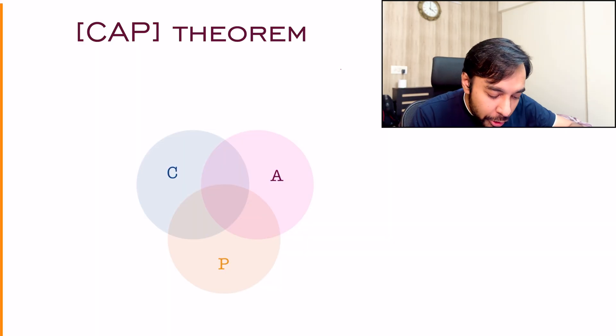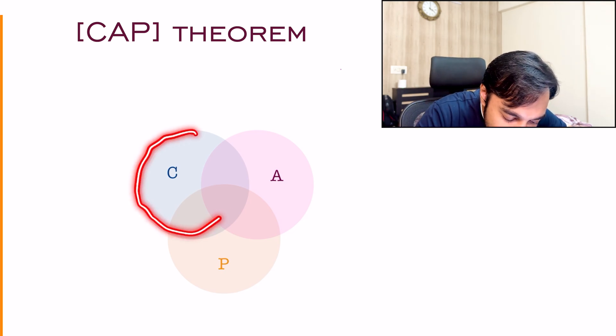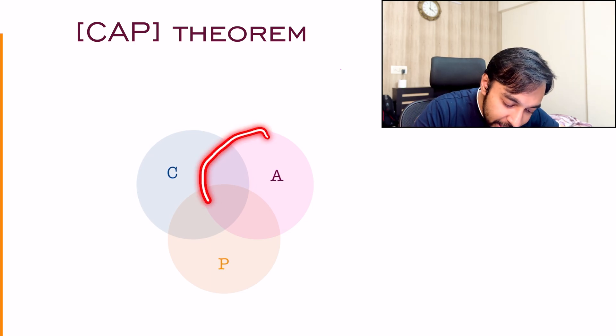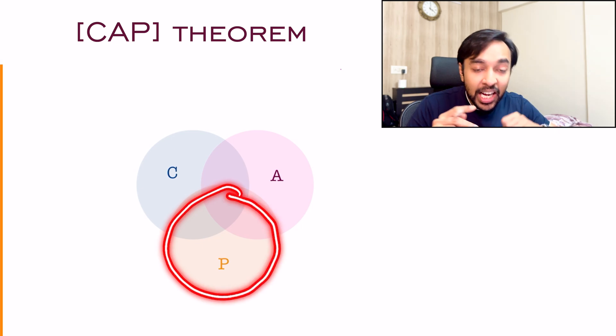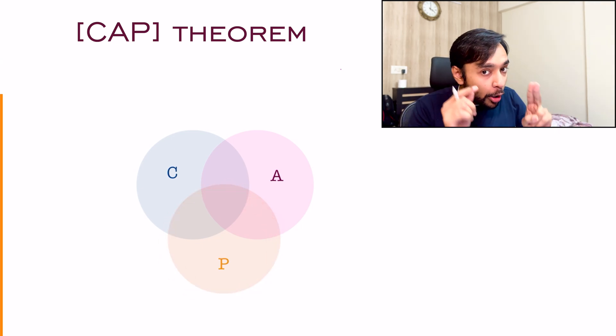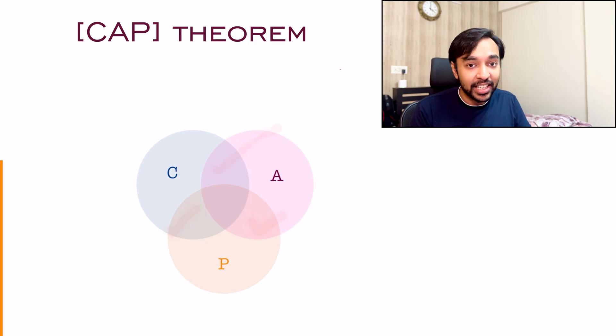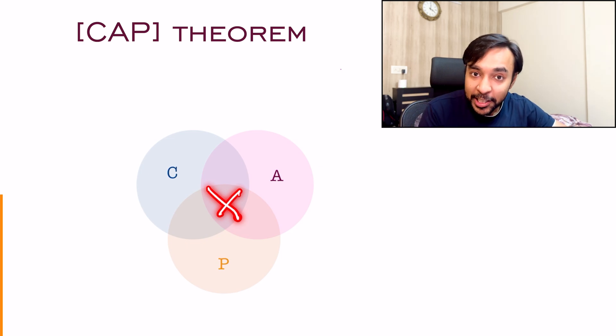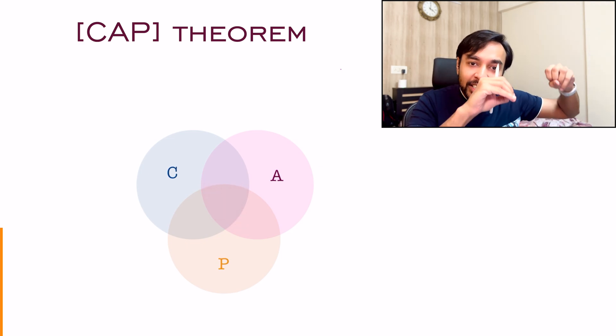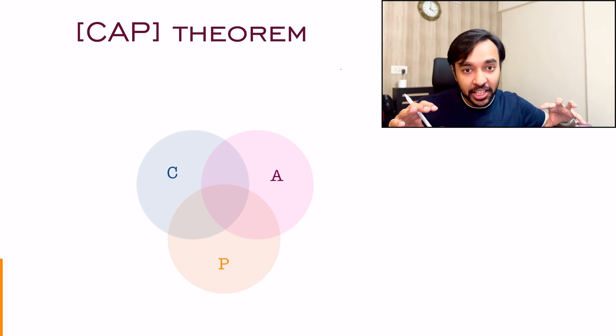So these are the three components — C, A, and P — and they define how good your distributed system actually is. Now that you understand all three parameters, we can talk about the CAP theorem. The CAP theorem simply states that in a distributed system, you can never have consistency, availability, and partition tolerance simultaneously — you will have to compromise on one of them. You can visualize this using a Venn diagram: systems that prioritize consistency, systems that prioritize availability, and systems that prioritize partition tolerance. According to the CAP theorem, you can occupy any two of these regions, but you can never have a design that satisfies all three conditions simultaneously.